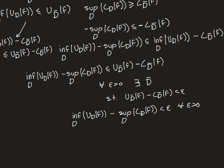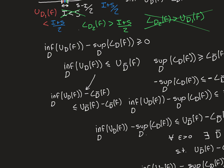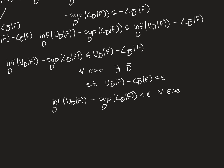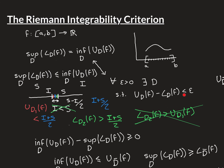From those two facts — that the quantity is greater than or equal to zero and strictly less than epsilon for all epsilon greater than zero — we can conclude it must equal zero. It can't be a positive real number, because whatever positive real number you took, I could find an epsilon smaller than it, and the quantity would still have to be less than that epsilon. So given it's non-negative, the only option is zero. Therefore, the supremum of the lower Riemann sums equals the infimum of the upper Riemann sums, and hence we've proven the backwards direction — if the Riemann integrability criterion holds, then the function is Riemann integrable.